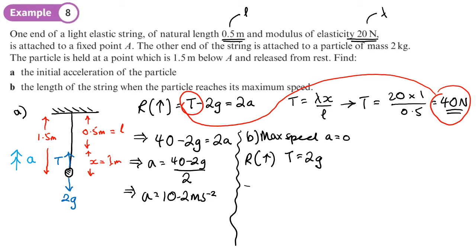Putting this into Hooke's law, we will have 2g equals, now the modulus elasticity is the same. We're trying to work out x, so that we can work out what its length will be. And its natural length is 0.5. So x equals 2g times by 0.5 divided by 20. So the length of the string is going to equal that x plus its natural length. So 0.5 plus 2g times by 0.5 over 20.